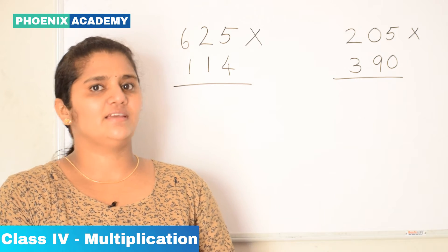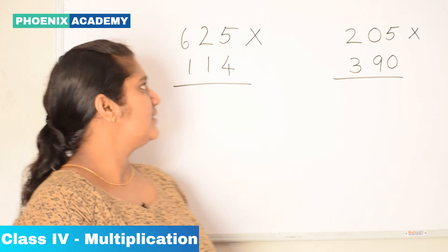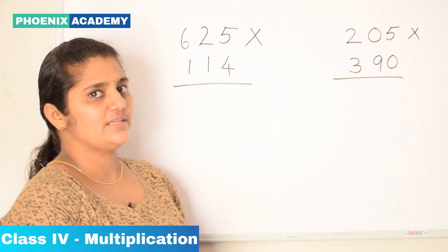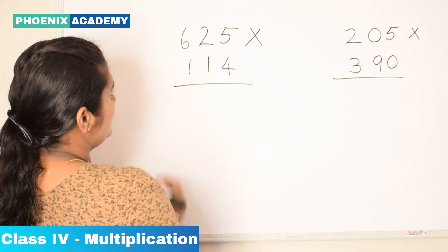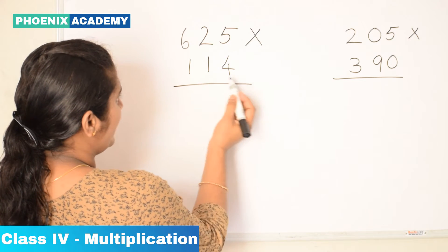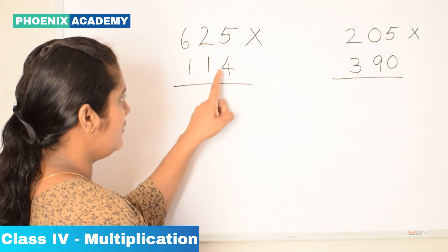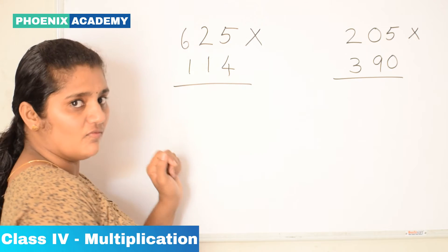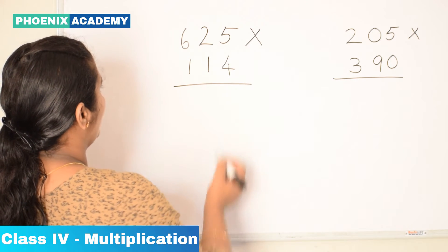Multiplying by a 3-digit number. We are going to multiply two 3-digit numbers: 625 into 114. Let's multiply the value in the 1's place with 625.